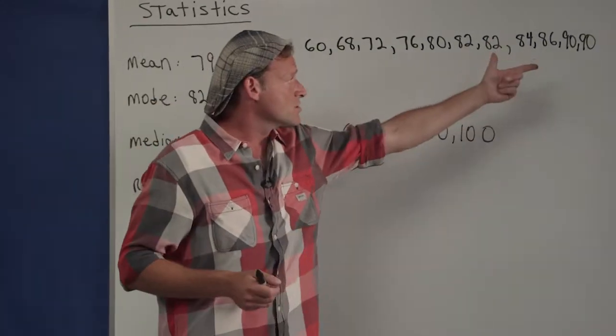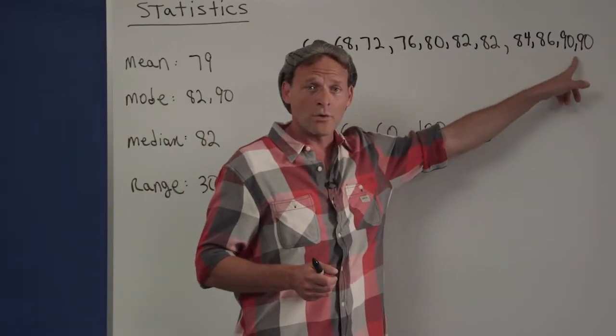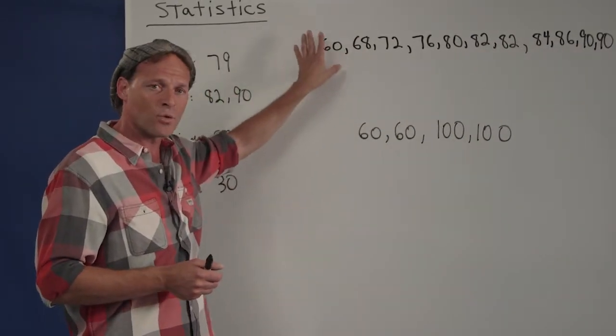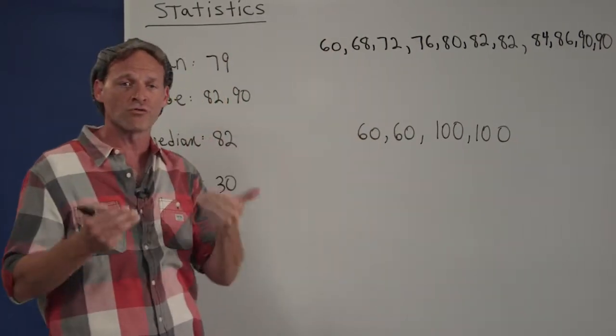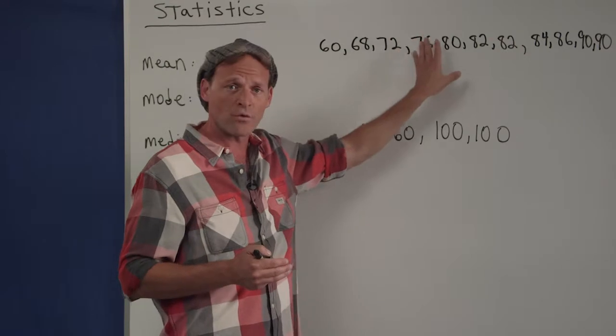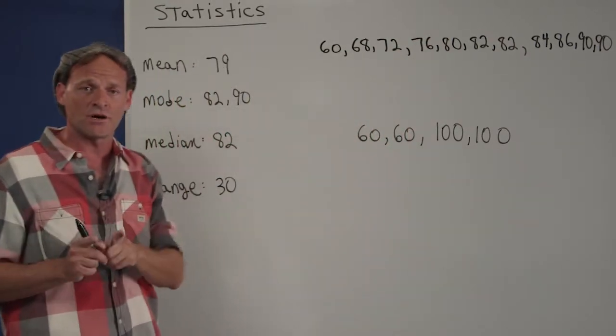Some students are certainly performing at the high B, low A level. Some are in the barely passing or close to passing range. Nevertheless, as a whole, as a group, the class is performing at an average of 79. That's what statistics does.